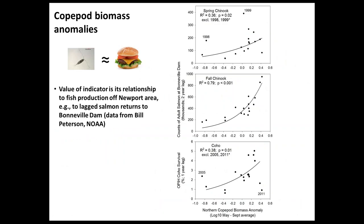This indicator is valued because Bill Peterson, who collects these data, has shown good correlations between northern copepods and the condition of salmon populations in the Oregon production area. As northern copepod biomass anomaly increases, returns of fall Chinook salmon go up with a very strong correlation. There are weaker but still significant correlations for returns of spring Chinook salmon and for Oregon coho survival — showing the relationship between the quality of the prey community and the well-being of salmon populations.